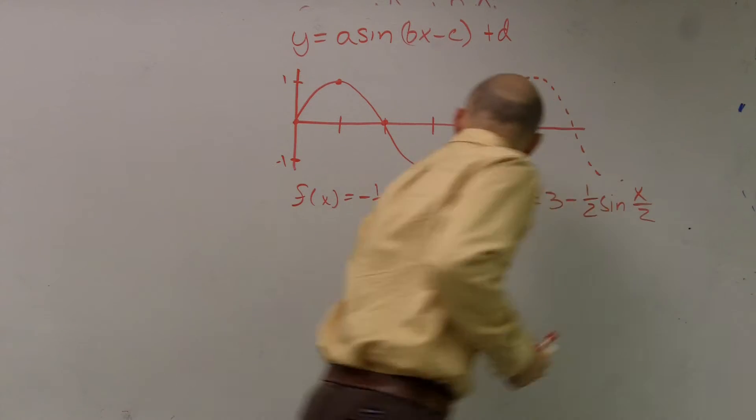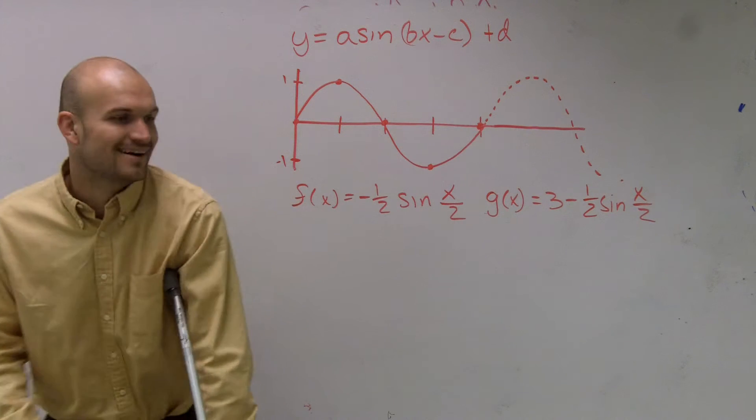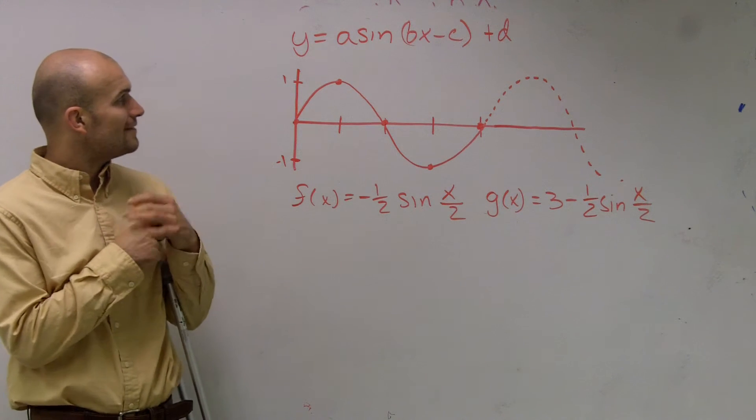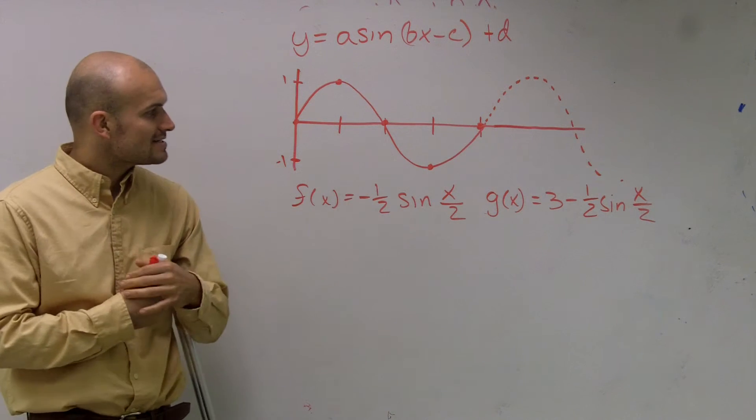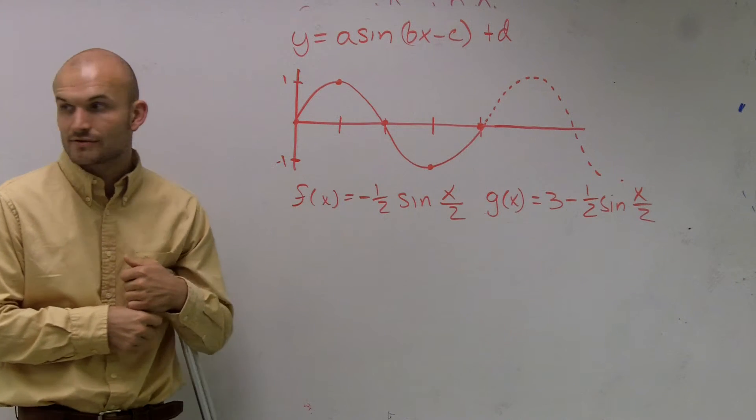Alright, so what I want to do is show you guys how to graph when we have sine of negative one-half sine of x over 2 and g of x equals 3 minus one-half sine of x over 2.